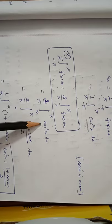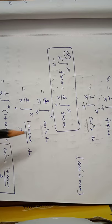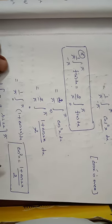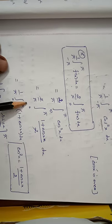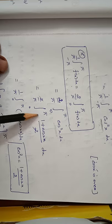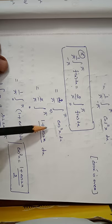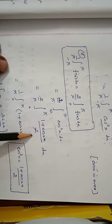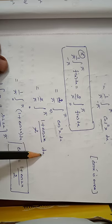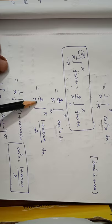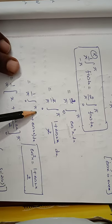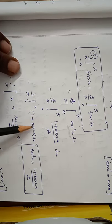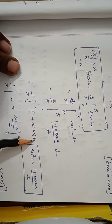The cos²x conversion formula is (1 + cos 2x)/2. So (2/π) times the integral from 0 to π of cos²x, which is (1 + cos 2x)/2, dx. The 2s cancel, giving (1/π) times the integral from 0 to π of (1 + cos 2x) dx.